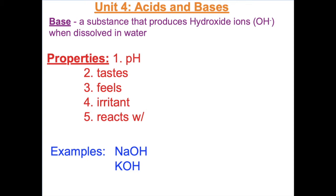A base is a substance that produces hydroxide ions when dissolved in water. They also tend to share certain properties. First, the pH is greater than 7. That means on the pH scale, a substance with a pH between 7 and 14 is basic, also called alkaline.